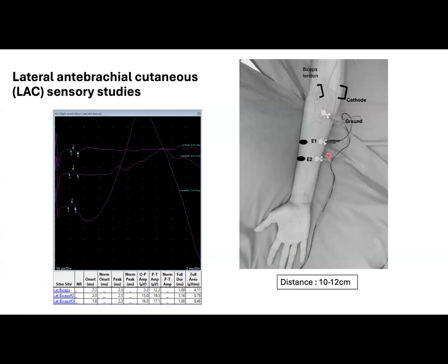Another examples are the lateral and medial antibrachial cutaneous sensory studies. For both nerves, most of the time we will get a good response with a distance of approximately 12 cm. One of the main issues with the LAC is that the stimulation site at the antecubital fossa is slightly lateral to the bicep tendon. Therefore, excessive stimuli may result in direct stimulation of the muscle, even with low intensities, as we can see here in the left side picture.